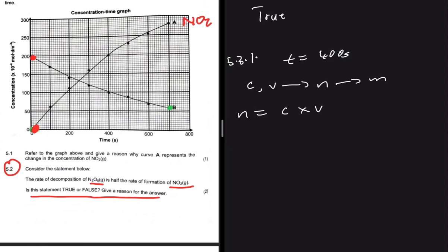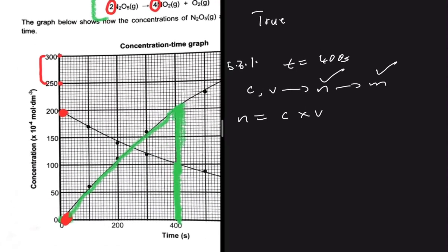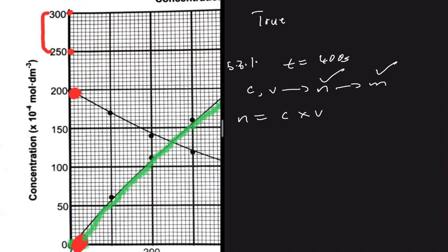The number of moles equals concentration × volume. At t = 400 s, looking at curve A, the concentration reads 200. But look carefully at the y-axis — the unit is ×10⁻⁴ mol·dm⁻³. So the concentration is actually 200 × 10⁻⁴, not simply 200. I made that mistake the first time I tried this problem, taking the concentration as 200 instead of 200 × 10⁻⁴.